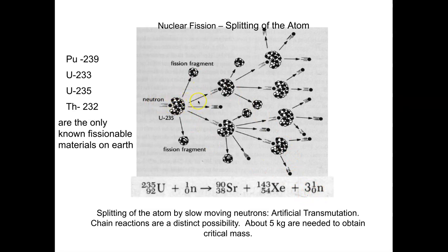We split uranium-235 and make three more neutrons that can find more fissionable material. This could be an uncontrolled chain reaction — a bomb — or it could be controlled if we absorb some of those neutrons and slow the reaction down, which is what we do in nuclear reactors.